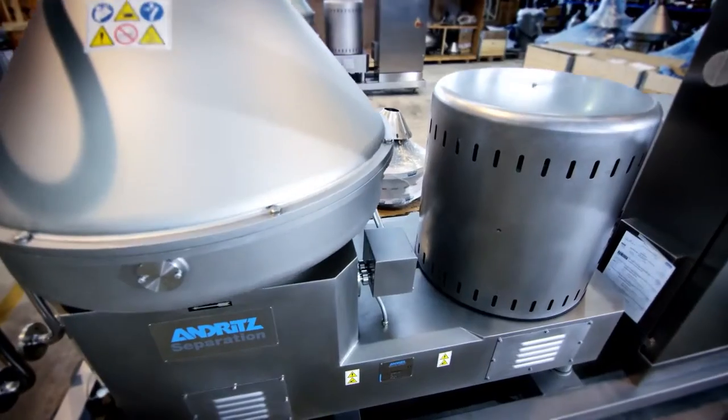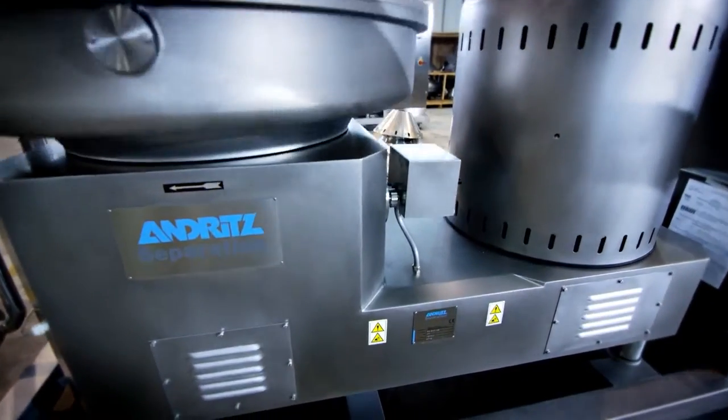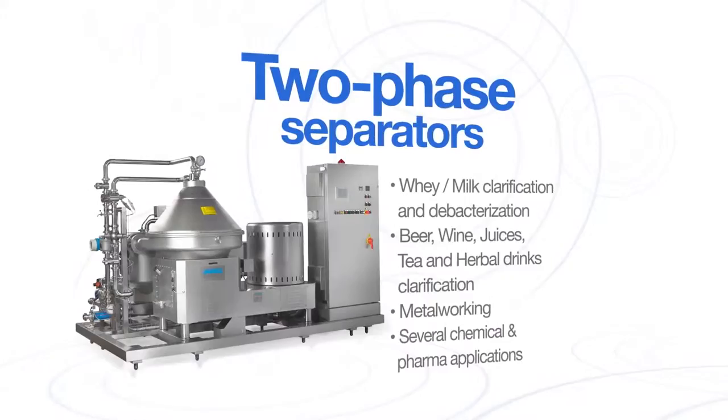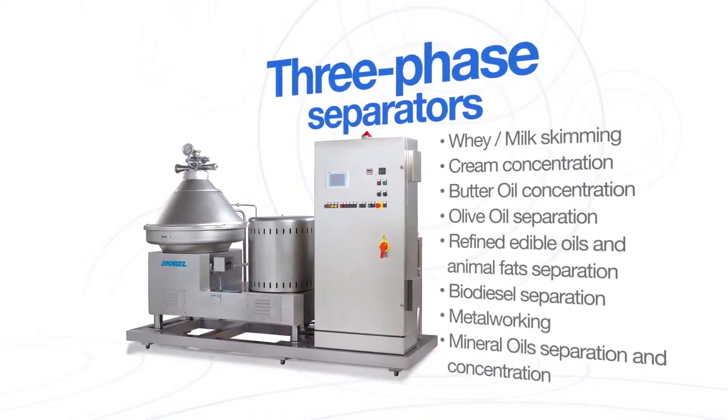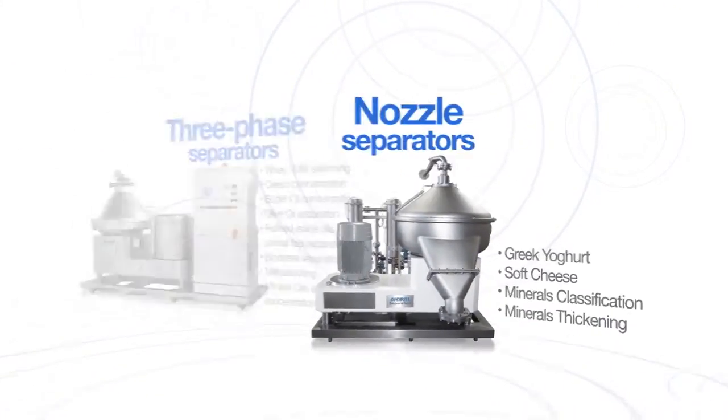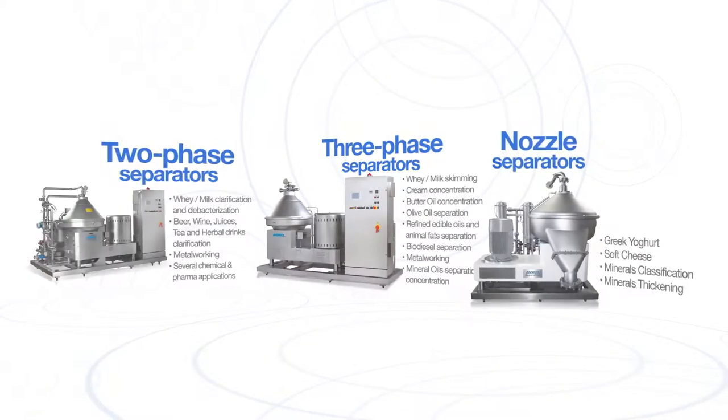The separators manufactured by Andritz Frautek are divided into three types: two-phase separators, three-phase separators, and separator nozzles. These machines fit into the production processes as needed.